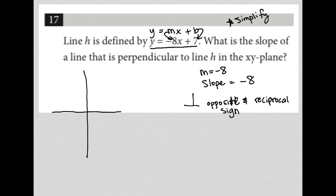So instead of negative 8, we'd have positive. And instead of 8, thinking of this as 8 over 1, it would become 1 over 8.